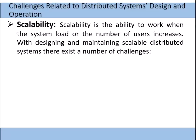There are certain challenges associated with distributed system design and operation. Scalability is the ability of the system to continue working when the system load or number of users increases. When the number of users increases, the number of processes also increases, and with shared resources among concurrent components, deadlock can occur and the system cannot efficiently work beyond a certain limit.